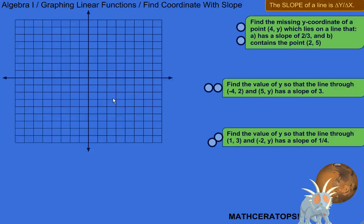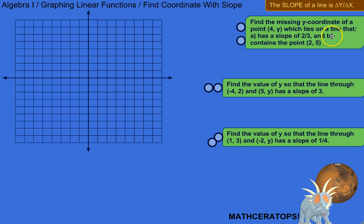We are going to practice finding the coordinate of a point on a line when you're given the slope of the line and another point that is on that line. So it would be problems like this: find the missing y-coordinate of a point where x is 4, which lies on a line that has a slope of 2/3. And this line also contains the point (2, 5).